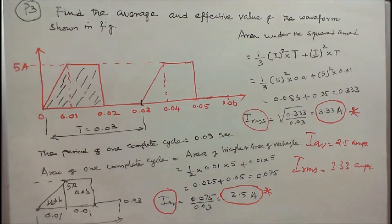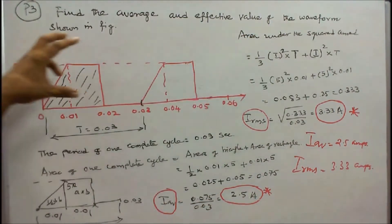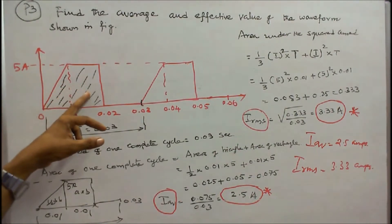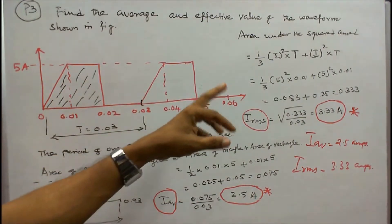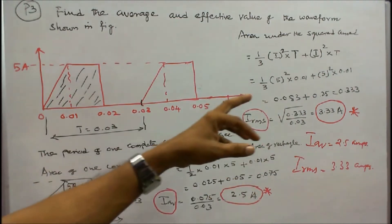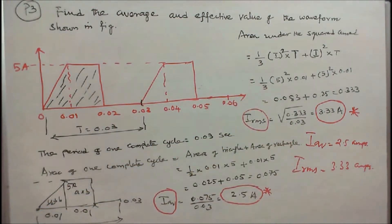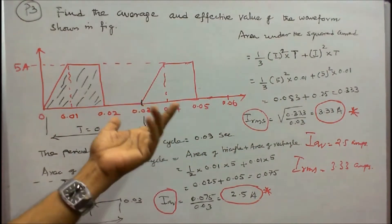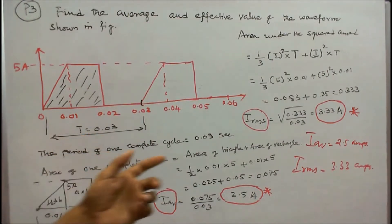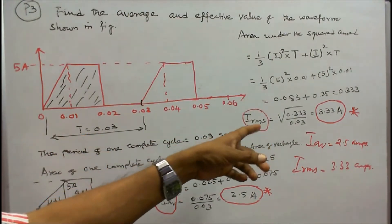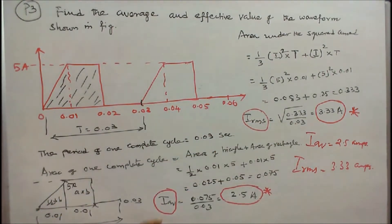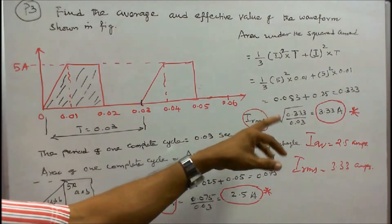Next, we find I RMS. The area under the squared curve equals (1/3) times I squared times T plus I squared times T, which is (1/3 times 25 times 0.01) plus (25 times 0.01), giving 0.333. I RMS equals the square root of 0.333 divided by 0.03, which equals 3.33 amps. Therefore, I average equals 2.5 amps and I RMS equals 3.33 amps.